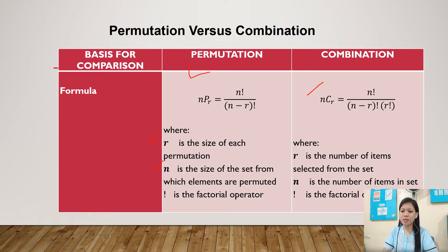In combination, the formula is: the combination of n objects taken r at a time is equal to n factorial over n minus r factorial times r factorial, where r is the number of items selected from the set, n is the number of items in the set, and the exclamation mark is the factorial operator.